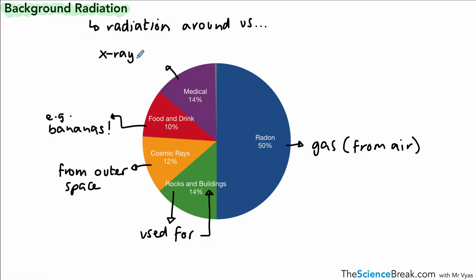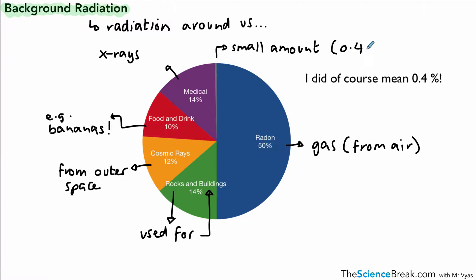We also have a source from the medical industry — for example, x-rays — and these contribute to background radiation as well, but it's a very tiny slice, around about four percent. If you've added up all those percentages and come to over a hundred, the reason is that the numbers are rounded and approximate.